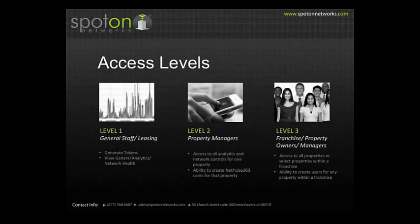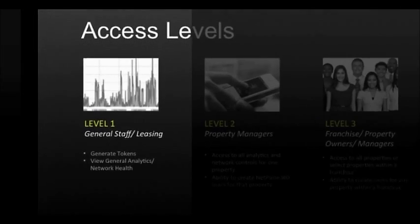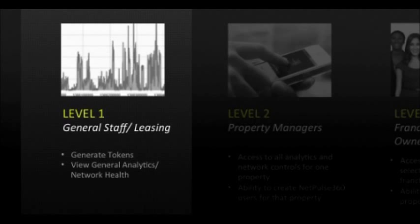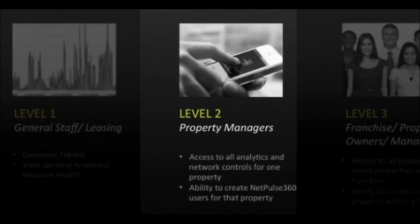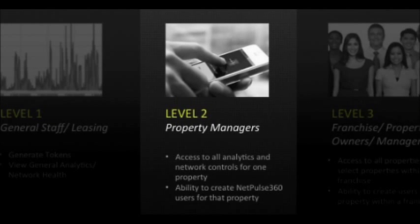There are three levels of permissions in NetPulse 360. Level 1 is for property staff and leasing agents. This level allows a user to view any information associated with the property they work at, but they are not able to access network controls, make changes to property info, or create new NetPulse 360 users. Level 2 is for property managers. Property managers can add or remove property staff at their property and can access network controls such as bandwidth throttle and black and whitelist at their property.